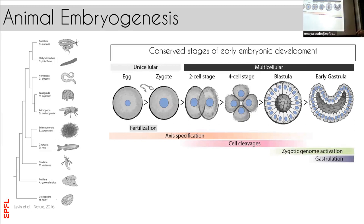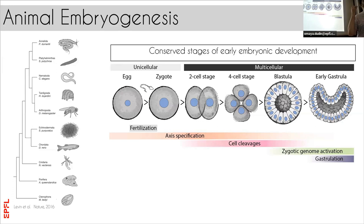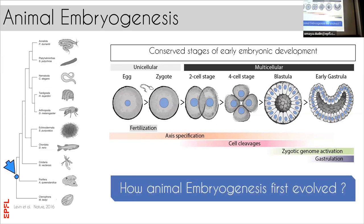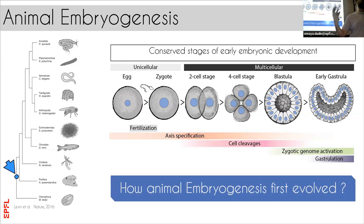Despite all the differences between animals, all of them undergo some sort of conserved early embryonic developmental program. Now, if we take into account that all animals carry a common ancestor, a key question emerges: did this type of development evolve only in animals, representing an animal innovation — or can we find molecular mechanisms which are present in their closest relatives? If you only use mouse and Drosophila, you will never be able to answer that question. The only way you answer it is to go back in time.